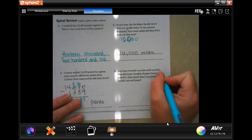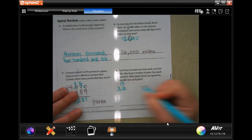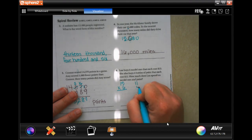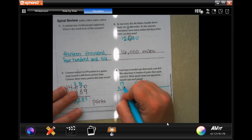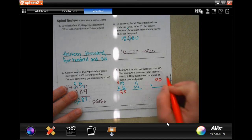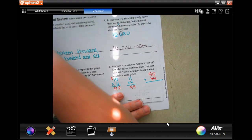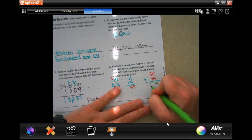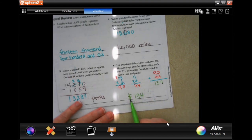Leah buys six model cards that each cost $15. She also buys four bottles of paint that each cost $11. How much does Leah spend on model cards and paint? So 15 and she bought six of those, plus $11 for paint and she bought four of those. Then we're going to add those up. So six times five, 30, six times one is six plus three is nine. So 90 is my first number and four times one is four and four times one is four. So our second number 44. Now we're just going to add those up. Zero plus four, four, nine plus four, 13. Your answer will be $134. Your dollar sign is your label.